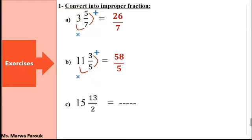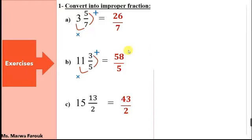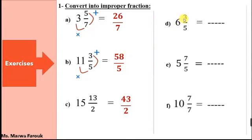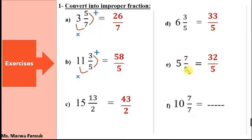Next one: 15 and 13 halves. We are going to multiply then plus. 15 times 2 equals 30, and 30 plus 13 equals 43. This is the new numerator. So we got 43 over 2. Another exercise: 6 and 3 fifths. 6 times 5 equals 30, and 30 plus 3 equals 33. The denominator doesn't change, so we got 33 over 5. Next: 5 and 7 fifths — 5 times 5 equals 25, 25 plus 7 equals 32, so 32 over 5.